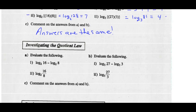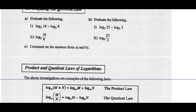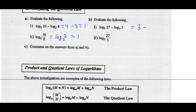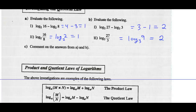Let's investigate the quotient law. We'll evaluate the following. From above, the log of 16 base 2 was 4, and the log of 8 base 2 is 3, so 4 minus 3 is 1. If we rewrite part 2, the log of 16 divided by 8 base 2 — log of 2 base 2 — is also 1. Part B: log of 27 base 3 is 3, and log of 3 base 3 is 1, so 3 minus 1 is 2. Rewriting as a single logarithm, 27 divided by 3 is 9; log of 9 base 3 is also 2. Again, the answers are the same value.